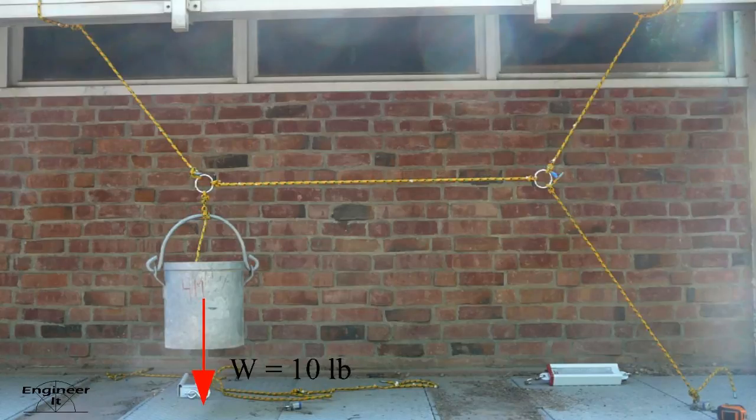Here is a bucket held in position by four ropes. The goal is to find the tensions in each rope given the bucket weighs 10 pounds.